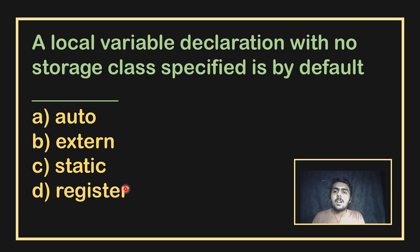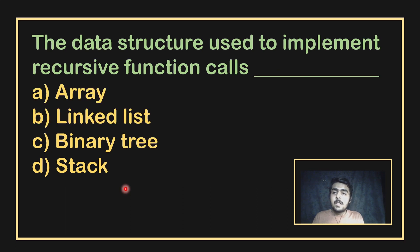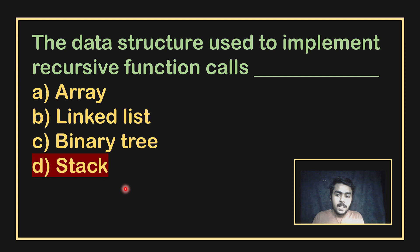A function variable declaration with no storage class specified is by default auto. The data structure used to implement recursion function calls is a stack.